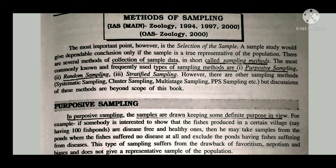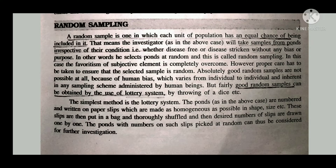This type of sampling suffers from the drawback of favoritism, nepotism, and biases, and does not keep a representative sample of the population. Moving on to random sampling: a random sample is one in which each unit of the population has an equal chance of being included in it.